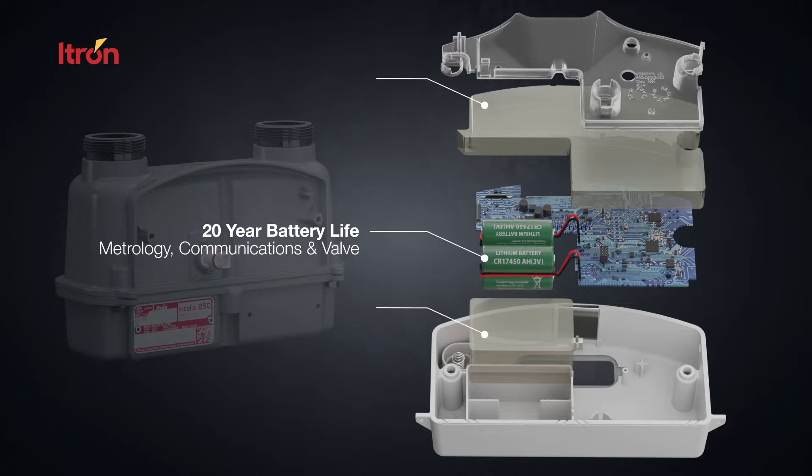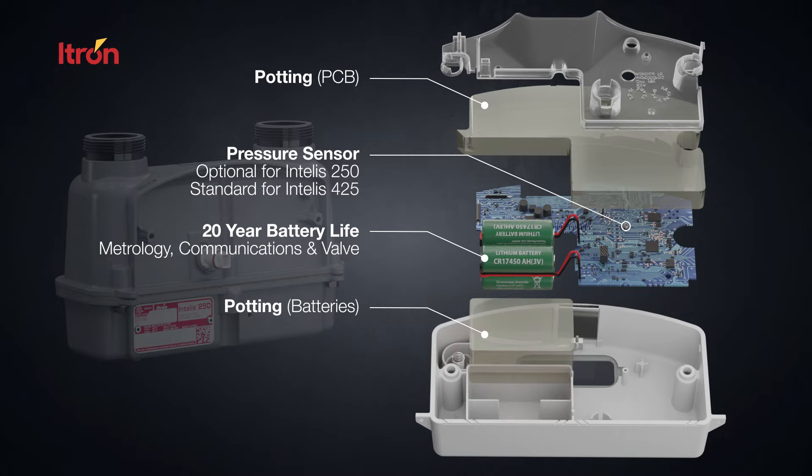The common platform index with pressure sensing is used on both the INTELIS 425 and the 250 meter if pressure sensing is required. For an INTELIS 250 meter without pressure sensing, a pressure sensor is not placed on the printed circuit board assembly. This pressure sensor measures atmospheric pressure.